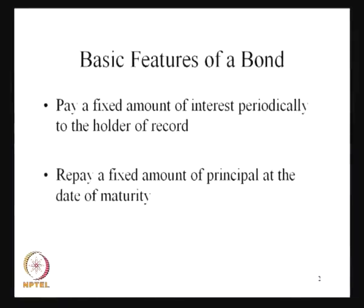So, before discussing these things, let us see what are the different features of a bond. Whenever we talk about equity, it gives return with a given amount of risk and the return is varied in nature — it depends on certain factors which decide how much return you are going to expect from that particular asset. But whenever we talk about the features of a bond, bond has special characteristics in this regard. Because bond basically pays a fixed amount of interest periodically to the holder of record and repays a fixed amount of principal at the date of maturity.